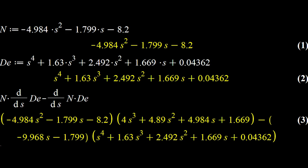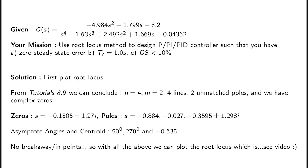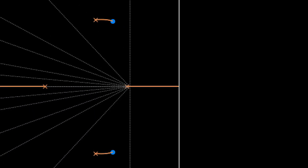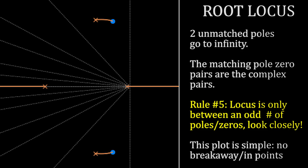With all this information you can plot the root locus. Two poles go to infinity because they have unmatched zeros; the other two poles and two zeros form matching complex pairs as you can see here. Rule number five states the locus exists only between an odd number of poles and zeros — look carefully and you'll see it. There are no breakaway or break-in points. Step one — plotting the root locus — is done.